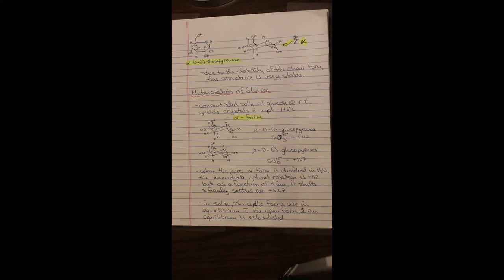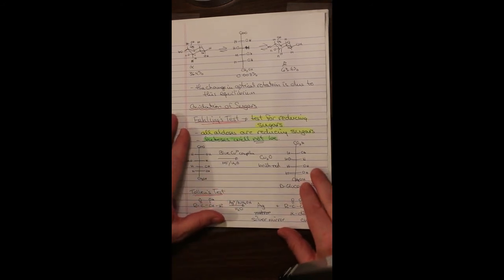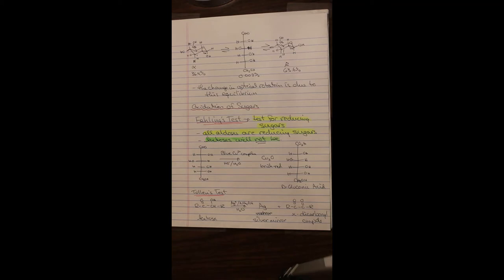But as a function of time, it shifts and it'll finally settle at plus 52.7. This means that an equilibrium has established itself in solution. It is an equilibrium between the alpha and beta form of the pyranose and also the acyclic form. In solution at equilibrium, 36.4% of the glucose is in the alpha form, 63.6% is in the beta form, and 0.003% is in the acyclic form. Primarily glucose is in the alpha and beta forms in solution, although there is a small amount that is acyclic. There has to be because that is how the conversion is occurring.